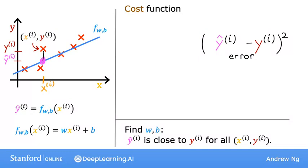Finally, we want to measure the error across the entire training set. In particular, let's sum up the squared errors like this. We'll sum from i equals 1, 2, 3, all the way up to m. And remember that m is the number of training examples, which is 47 for this data set. Notice that if we have more training examples, m is larger, and your cost function will calculate a bigger number since it's summing over more examples.